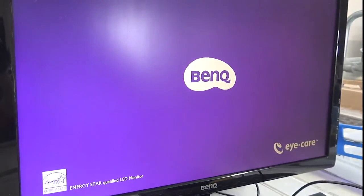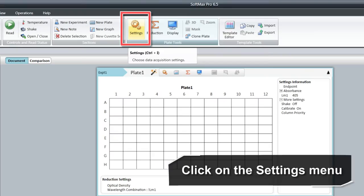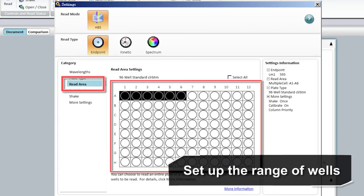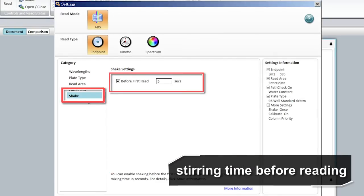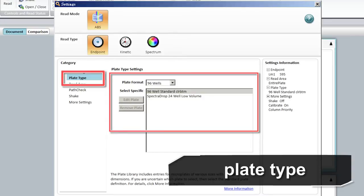2. Turn on the computer connecting to the spectrophotometer and start the control software. 3. Click on the settings menu. Set up the wavelength, range of wells, starting time before reading, volume calibration, and other relevant parameters.